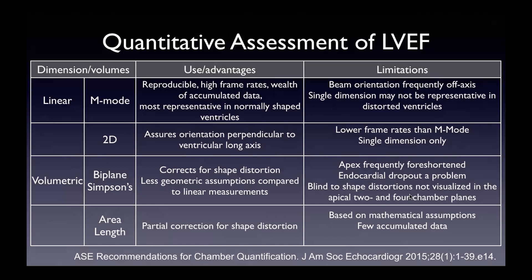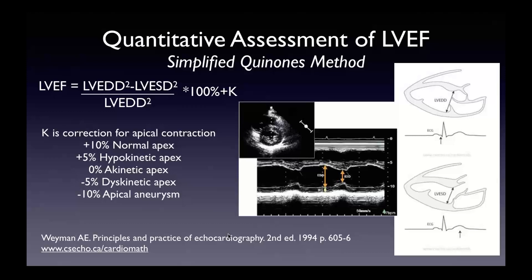The area-length method won't be touched on as it's not used frequently. For linear measurements in M-mode or 2D, the most common technique is the simplified Quinones method — based on LV end-diastolic and systolic dimension at the base on the parasternal long axis, with a correction for apical abnormalities where you add or subtract 10% based on whether the apex is normal, hypokinetic, akinetic, dyskinetic, or has an apical aneurysm. This is not recommended anymore by ESE guidelines; it's put in as more of a historical notice.